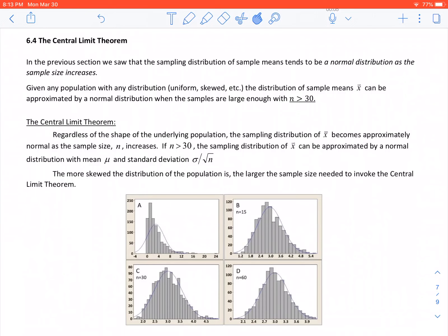Moving into 6.4, the central limit theorem. In previous sections, we saw that sampling distributions of sample means tend to be normally distributed as sample size increases. Given any population with any distribution—uniform, skewed, etc.—the distribution of the sample mean x-bar can be approximated by a normal distribution when the samples are large enough. The idea of the sample being large enough: our magic number is our sample size has to be larger than 30.